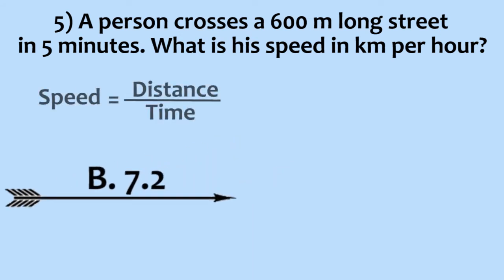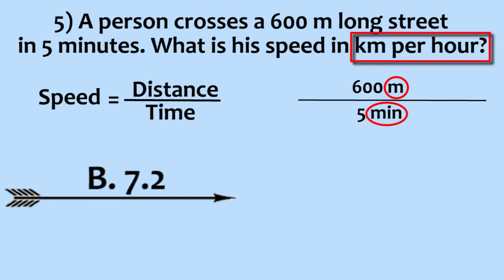As mentioned earlier, speed equals distance upon time. Here, the given units are meters and minutes, but the required units are kilometers and hours. So, this is what we get.